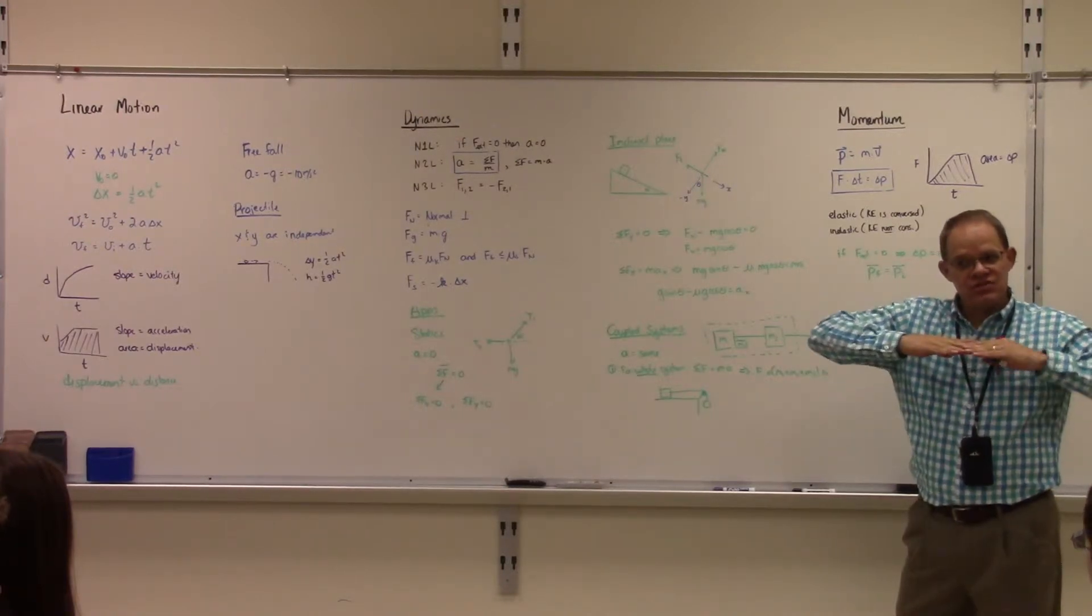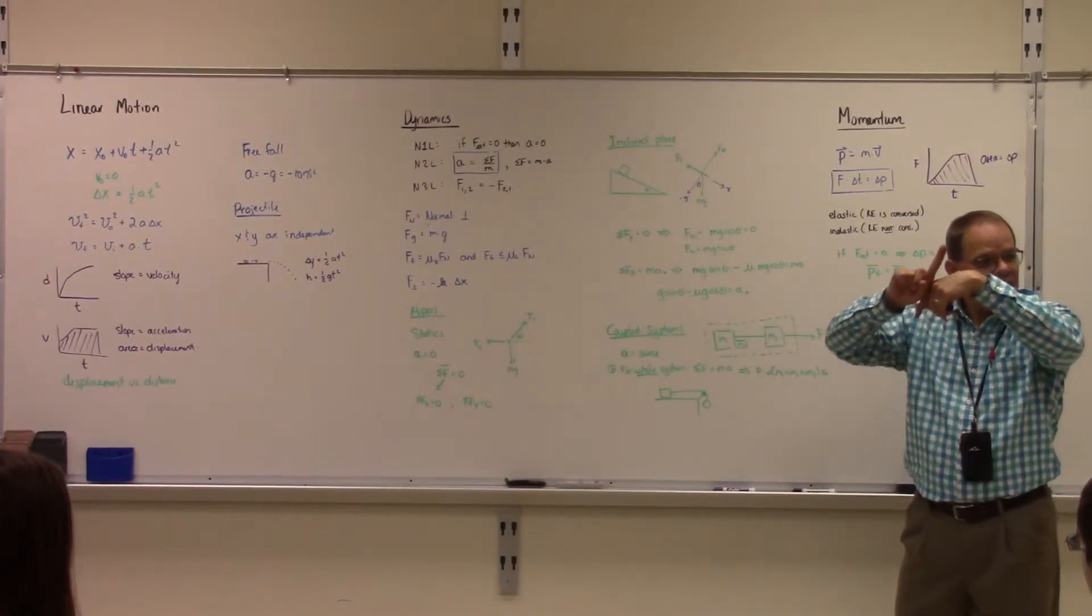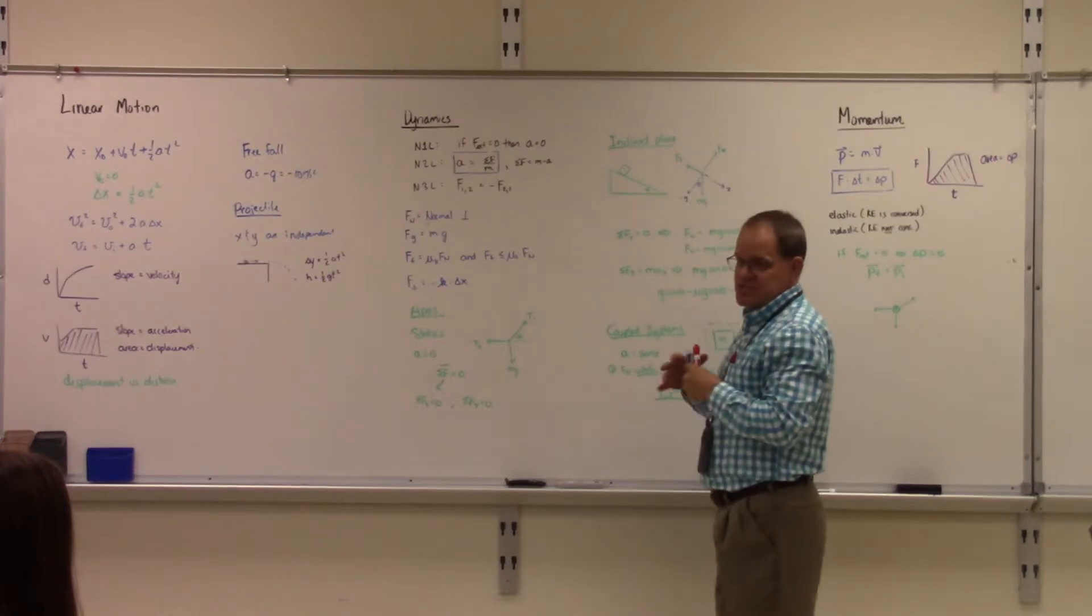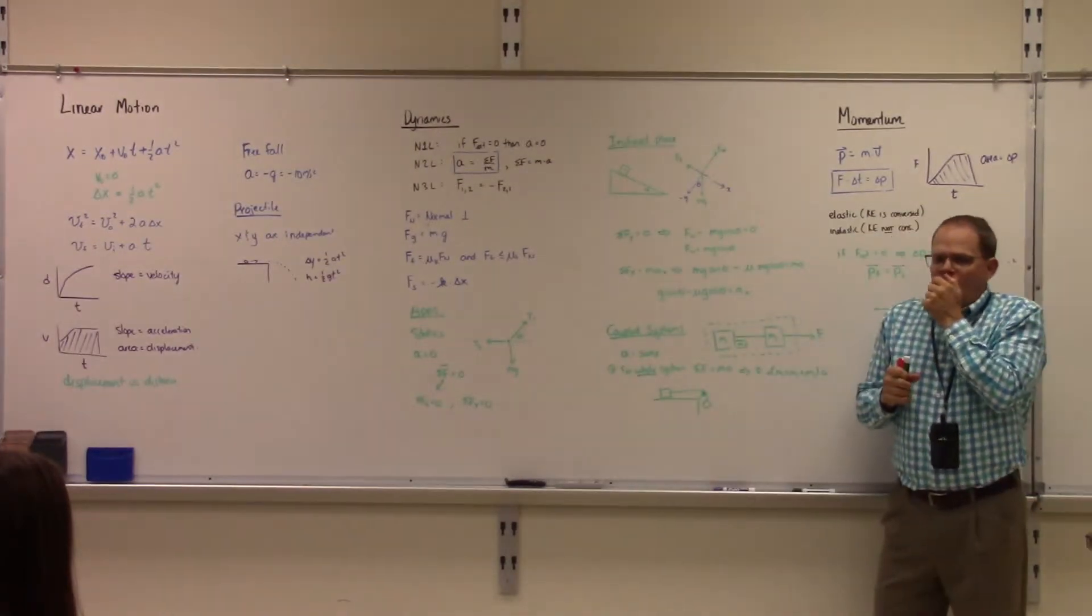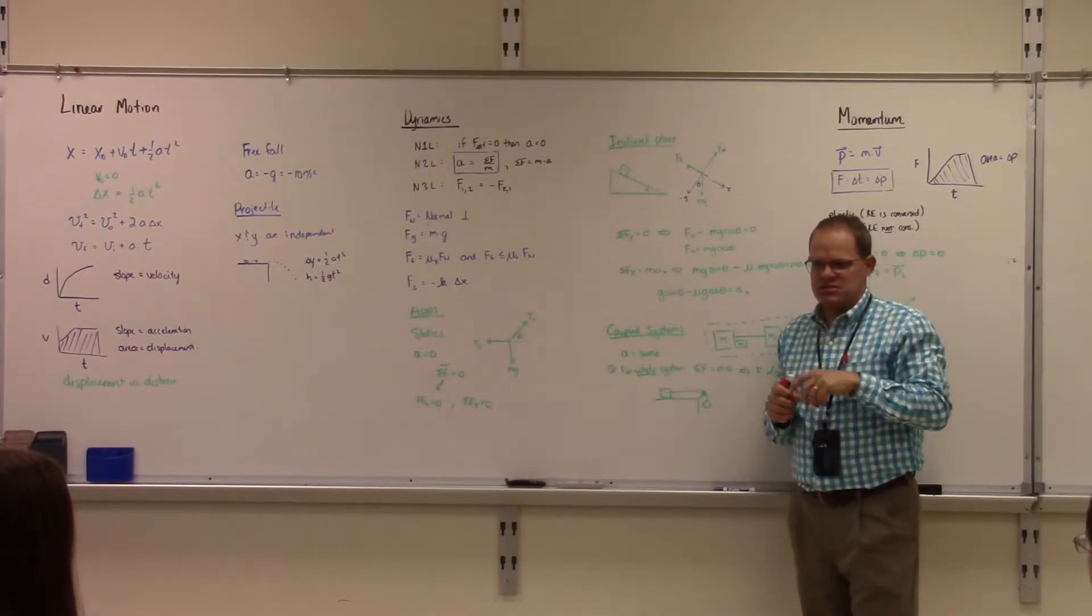See, on a level surface the normal force cancels gravity, there's no external force there. But on an incline plane, does the gravity force cancel the normal force? No. So there's a net force, momentum will not be conserved for collisions on an incline plane.